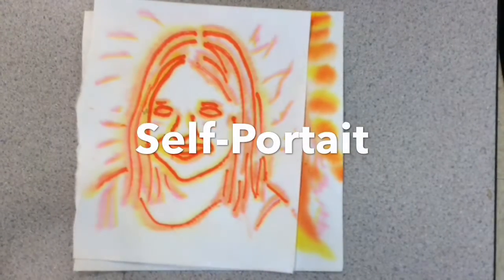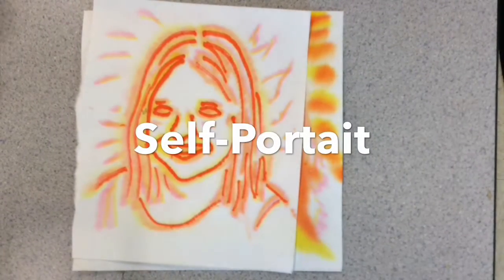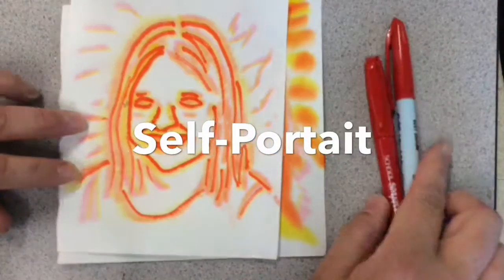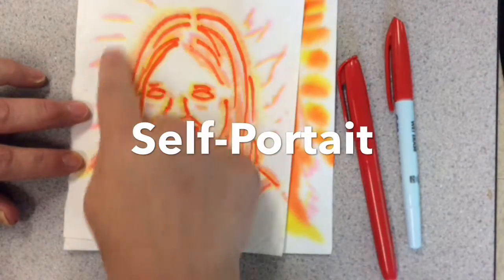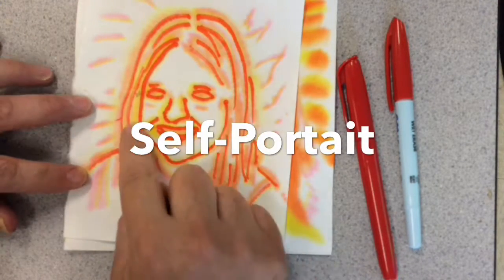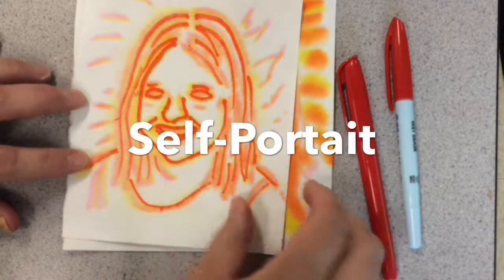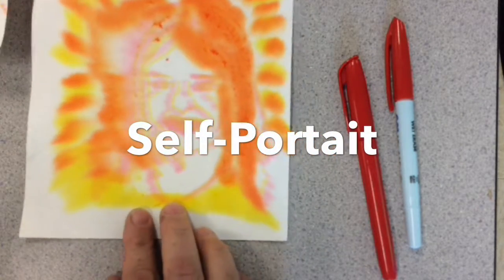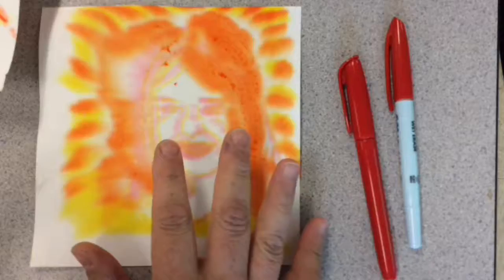So today we're making some self-portrait drawings. We're going to be tracing ourselves, our self-portrait, and you're going to do a pattern or design in the background. When we're done, we're going to go over it with permanent marker, because here's what happens if you don't use permanent marker, it gets pretty blurry.